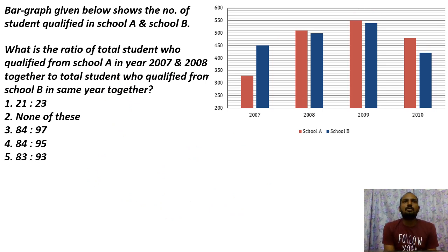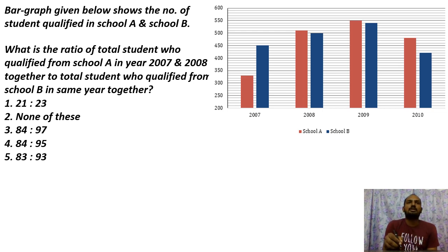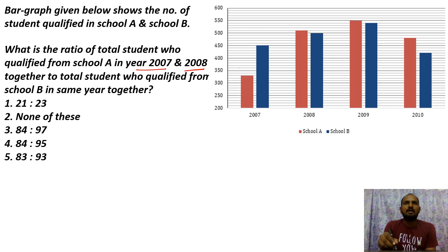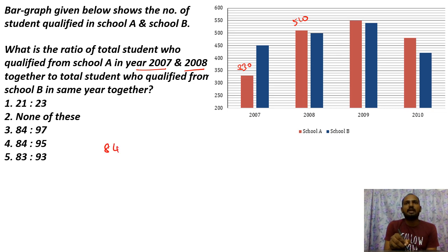Next question: What is the ratio of total students who qualified from School A in 2007 and 2008 together to total students who qualified from School B in the same years together? For School A in 2007 and 2008 combined, the value is 330 plus 510, which gives 840.